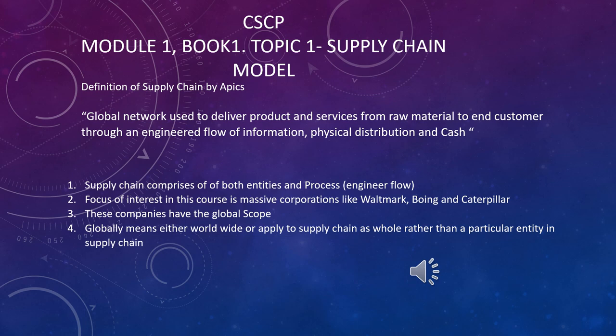Globally here means either worldwide or applied to the supply chain as a whole, rather than a particular entity in the supply chain. For example, the F-16 is made in the USA, but some of its components come from Turkey and other countries. As a whole, we consider the supply chain — that means to have a global scope.